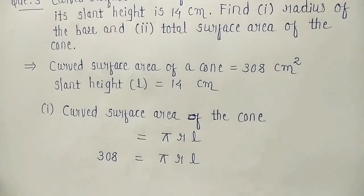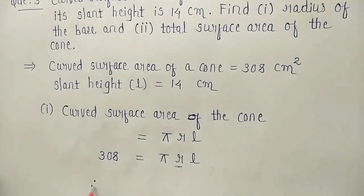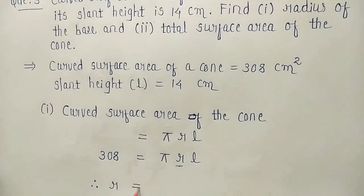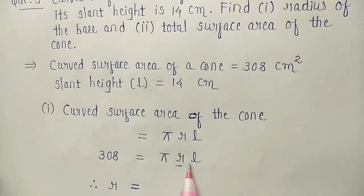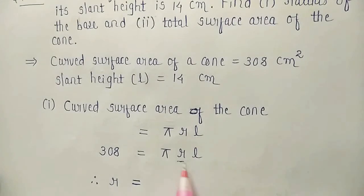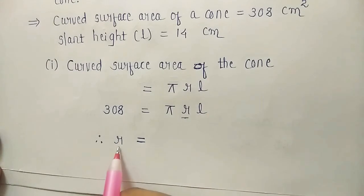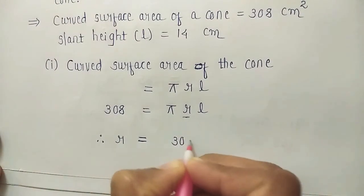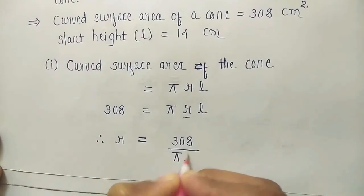Now we want to find the value of radius r. Therefore r will be equal to — pi and l are in multiplication with r, so we have to remove both from this side. When they go to the left-hand side they become the denominator because they are in multiplication. Therefore r will be equal to 308 divided by pi l.